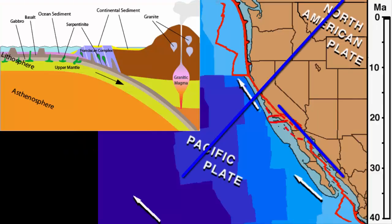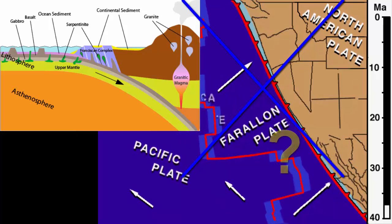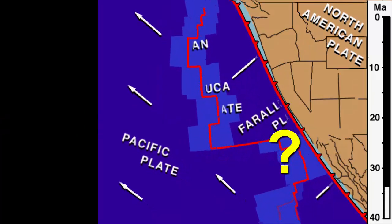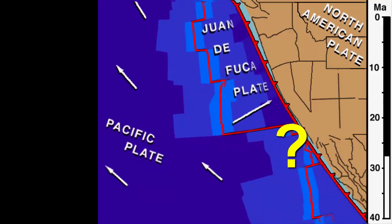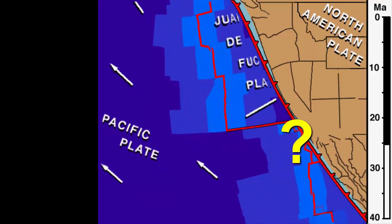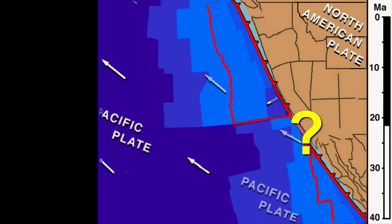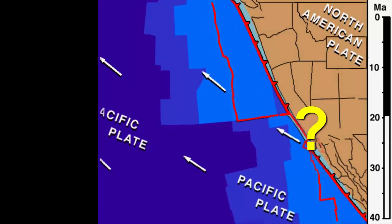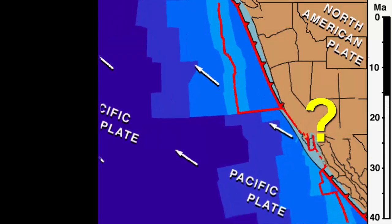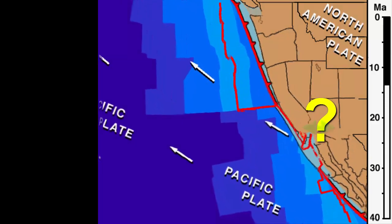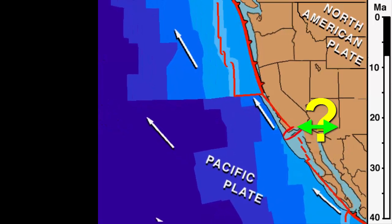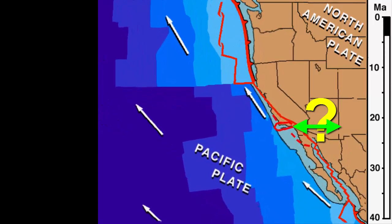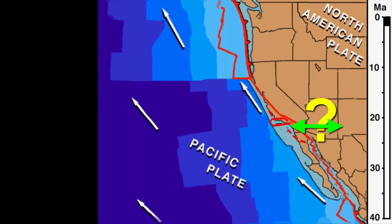Subduction now over, the volcanism of the Sierra Nevada also ended. But what happened to that spreading center? We can image the crust under North America and see evidence of the old plate still subducting. And right above the spot where we suspect the spreading center would now be, we have an area of tension where the continental crust is being pulled apart, similar to the breakup of Pangaea.